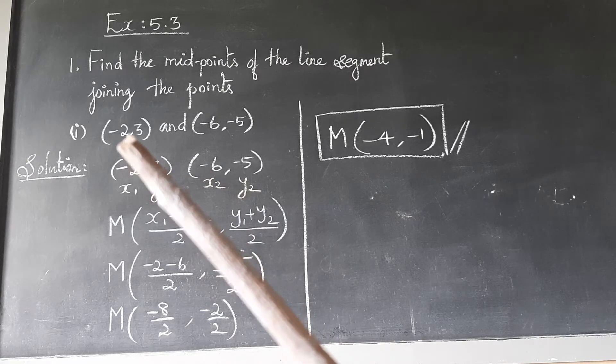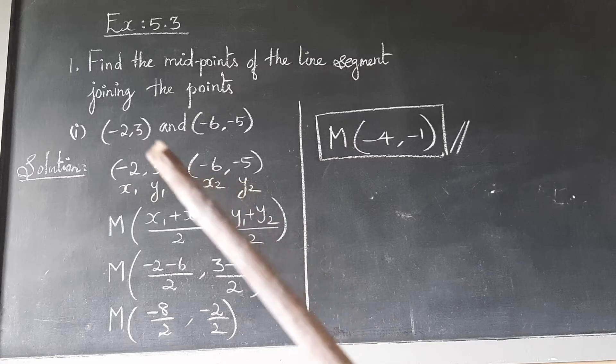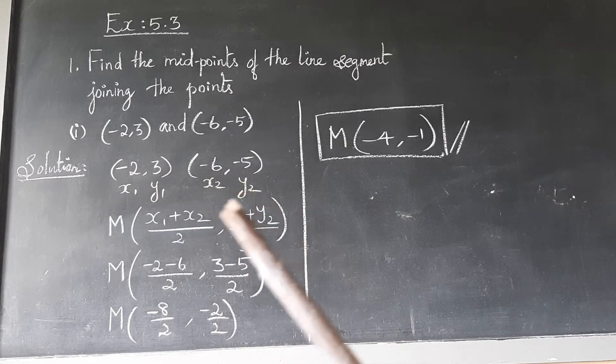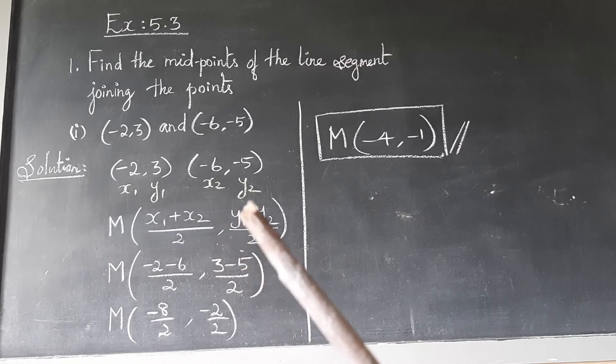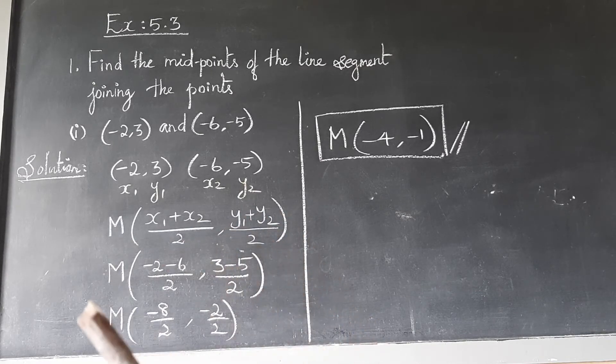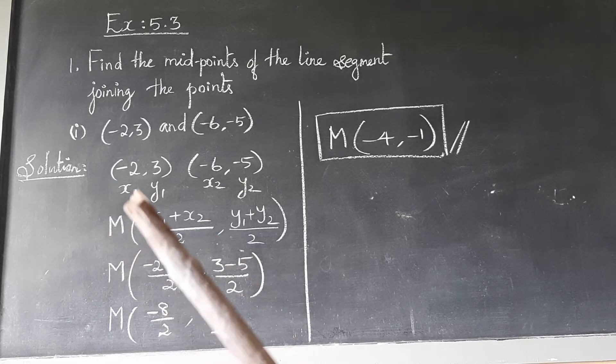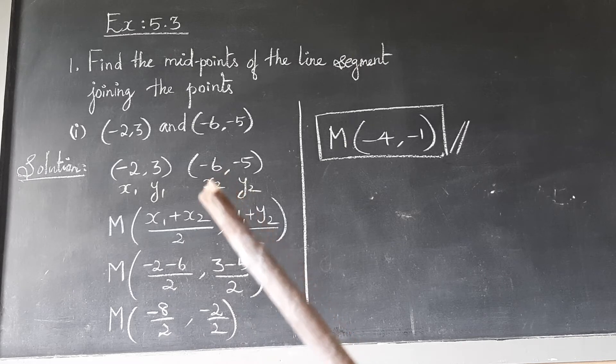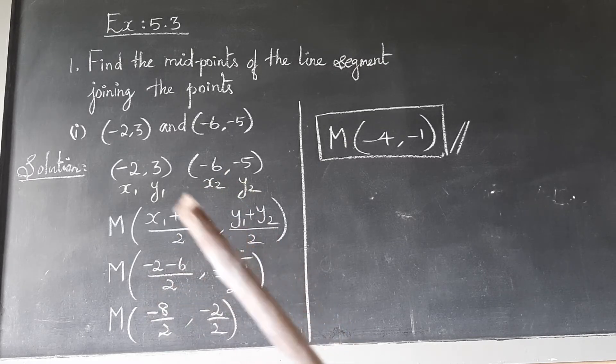Write x1, y1 here and x2, y2 here. First point is (x1, y1) and second point is (x2, y2). The formula is M = ((x1 + x2)/2, (y1 + y2)/2). So M equals, substitute the x1, x2 values. x1 is -2 and x2 is -6.